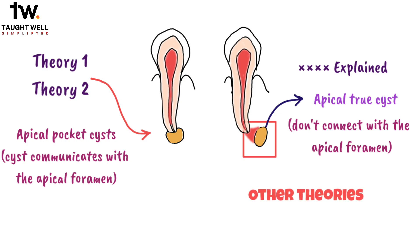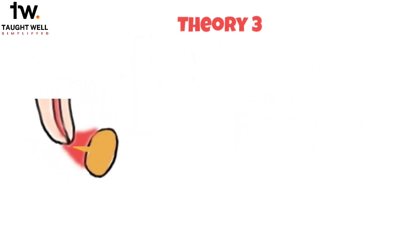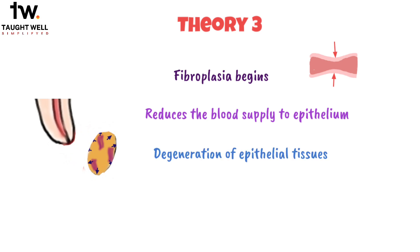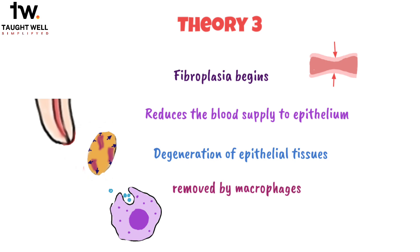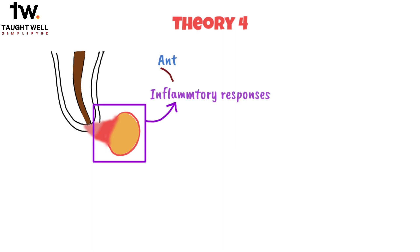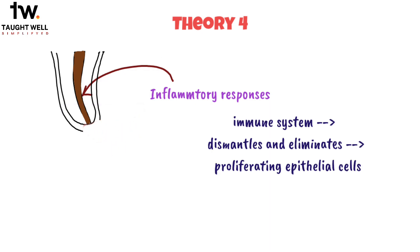For such cases, other theories come into play. One suggests that as the inflammatory process subsides, drainage is established, fibroblasia begins, and collagen production increases. The growing collagen exerts pressure that reduces the blood supply to the epithelium by compressing the vascular network in the granulomatous tissue, causing the degeneration of the epithelial lining, which is then removed by macrophages. The current and most likely theory is that periapical lesions are inflammatory responses to the antigen content within the root canal system, and the proliferation of epithelial cells is a reaction to these irritating materials. When the source of irritation is eliminated, the immune system gradually dismantles and eliminates the proliferating epithelial cells.